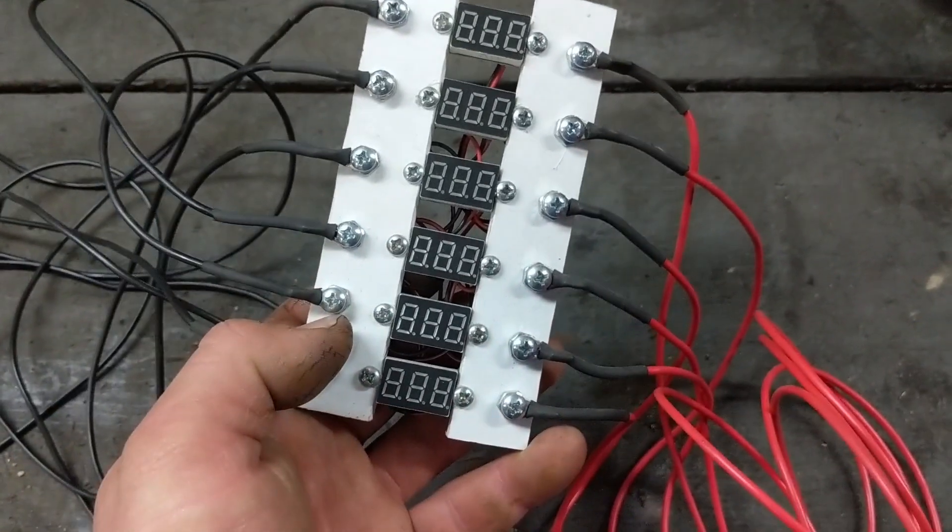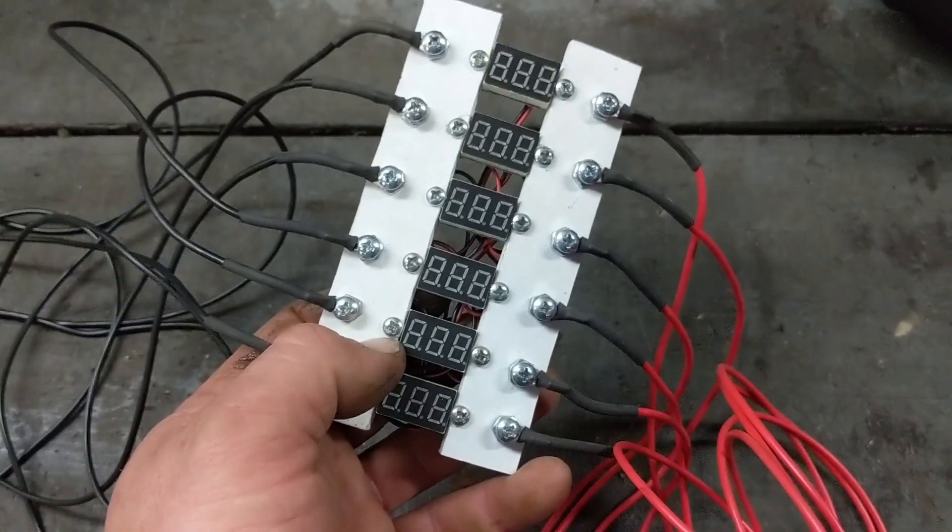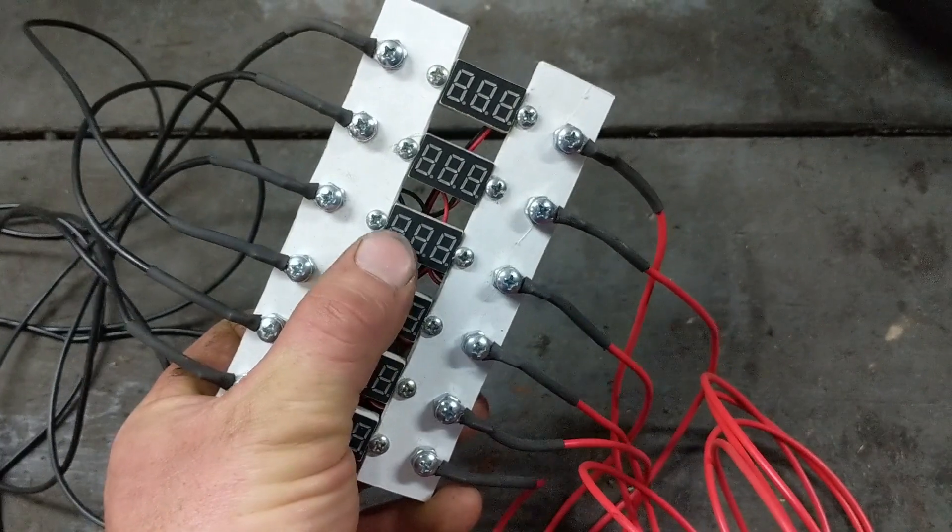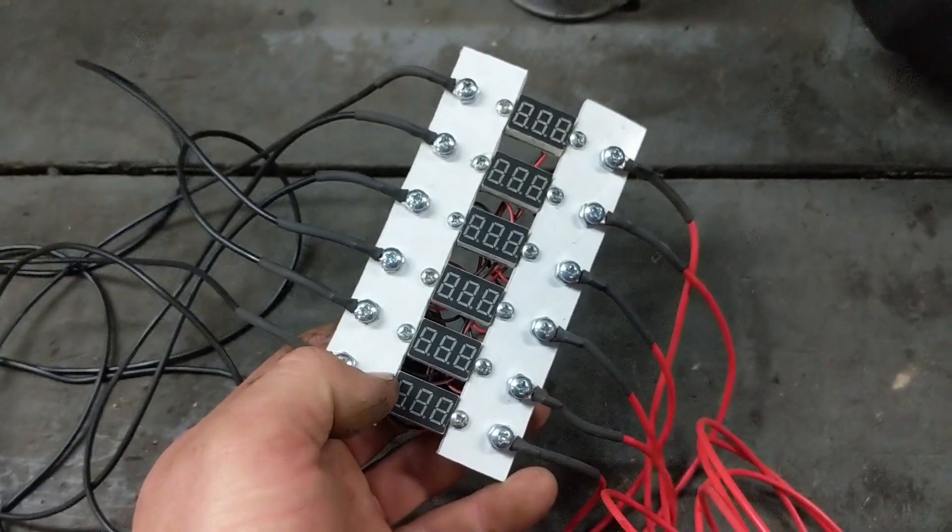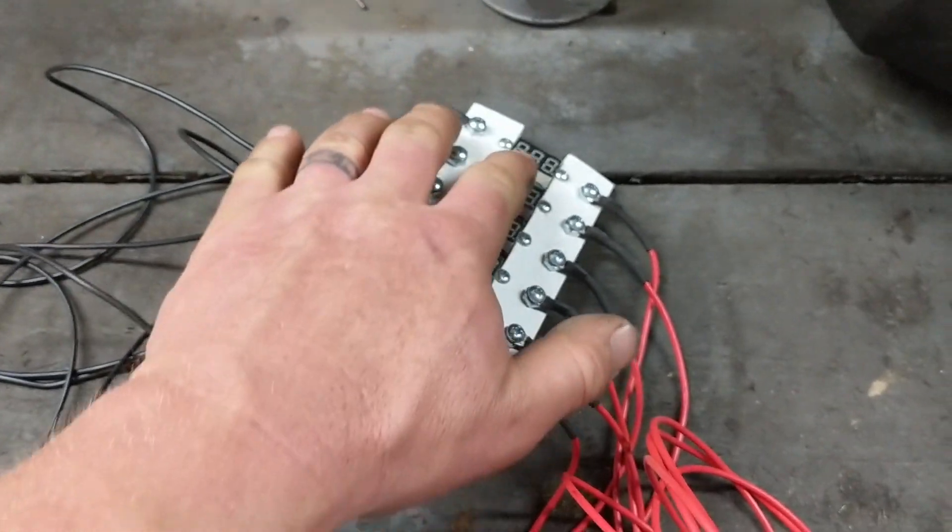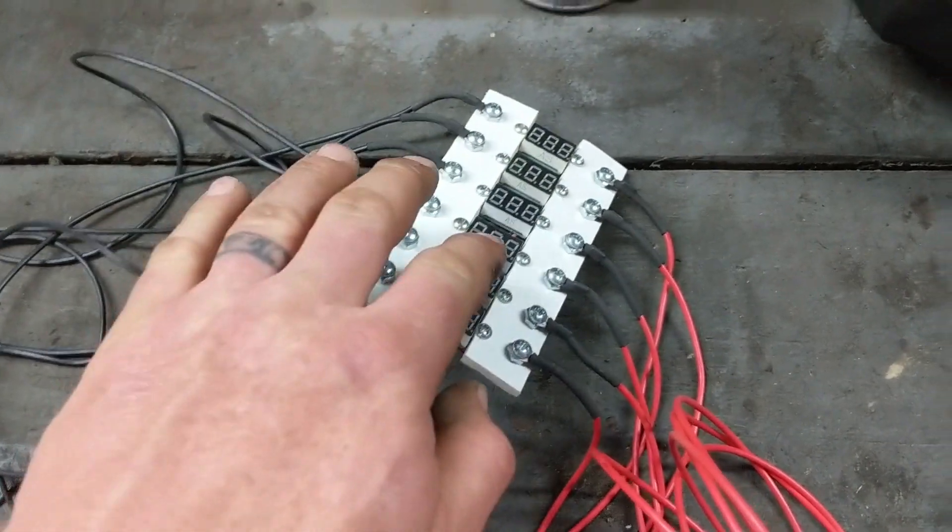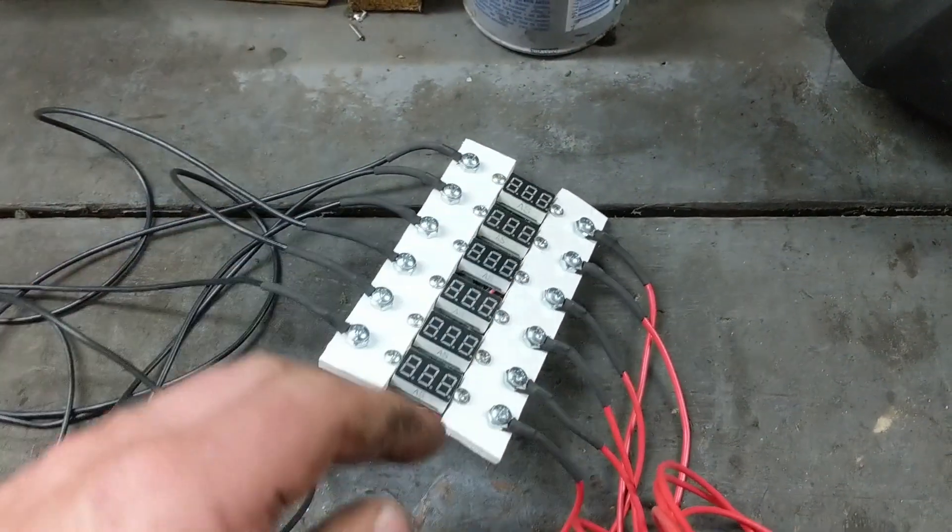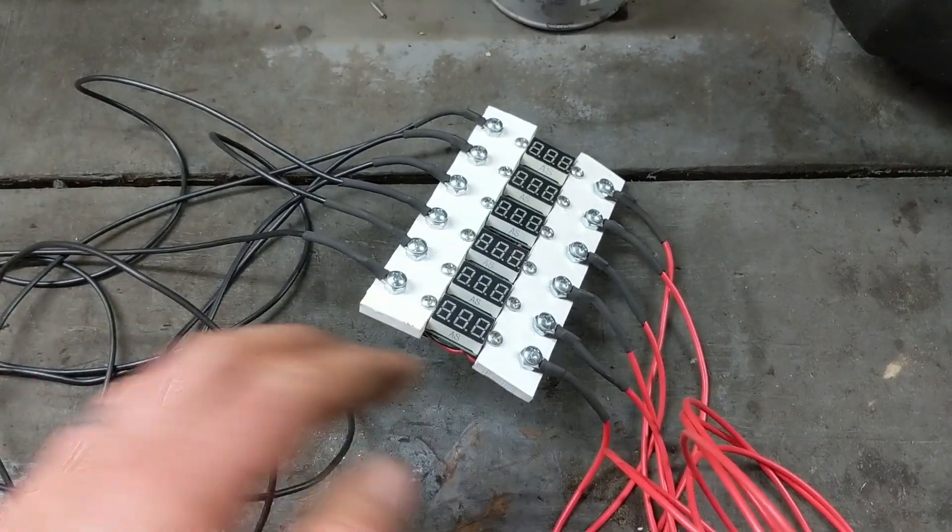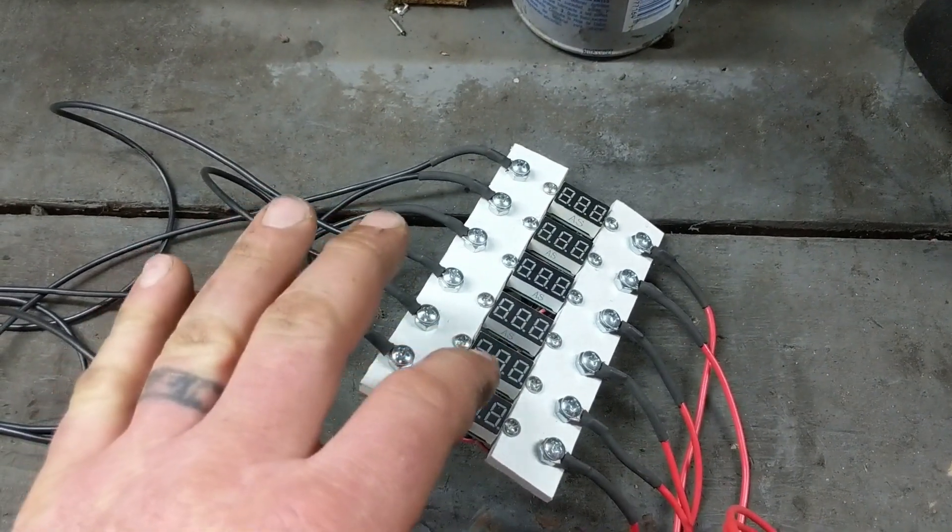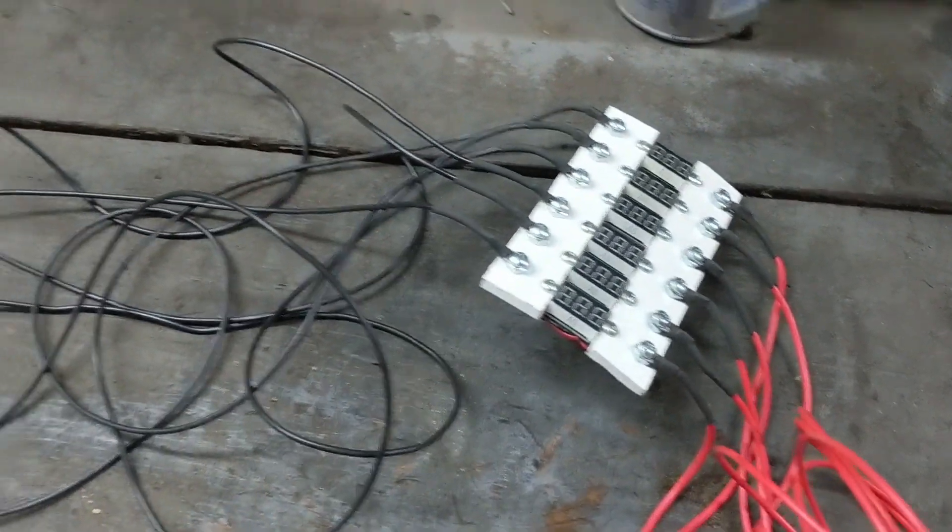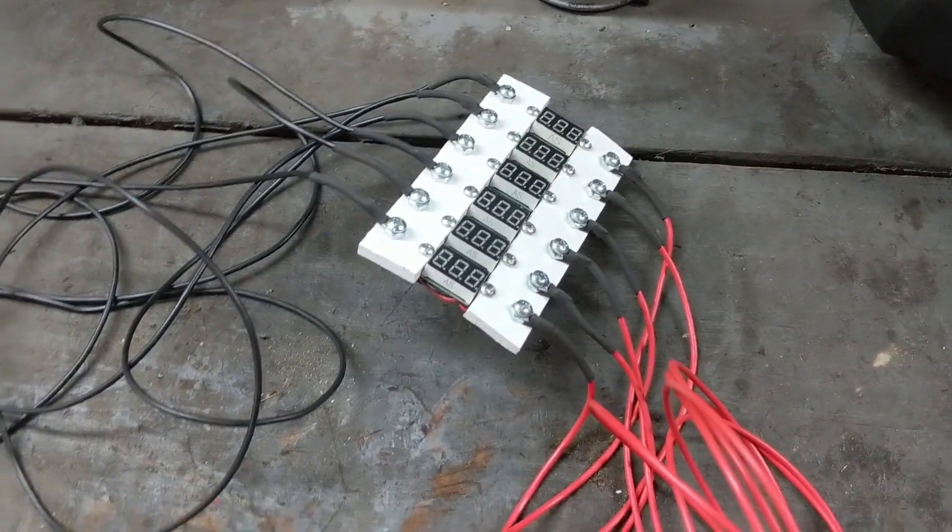Basically what we're going to do with this is we're going to connect it to each of those batteries one to six, and this will give us the individual battery readout while the Lester drain tool is draining the battery. So we're going to have a super accurate countdown, and at 42 and a half volts when this thing is about ready to shut off, we'll be able to make note of each individual battery's voltage output.